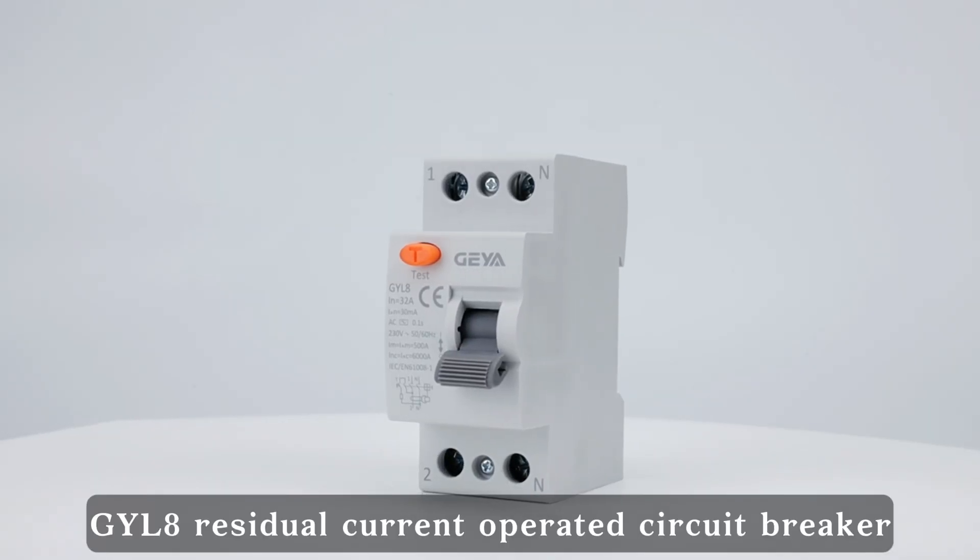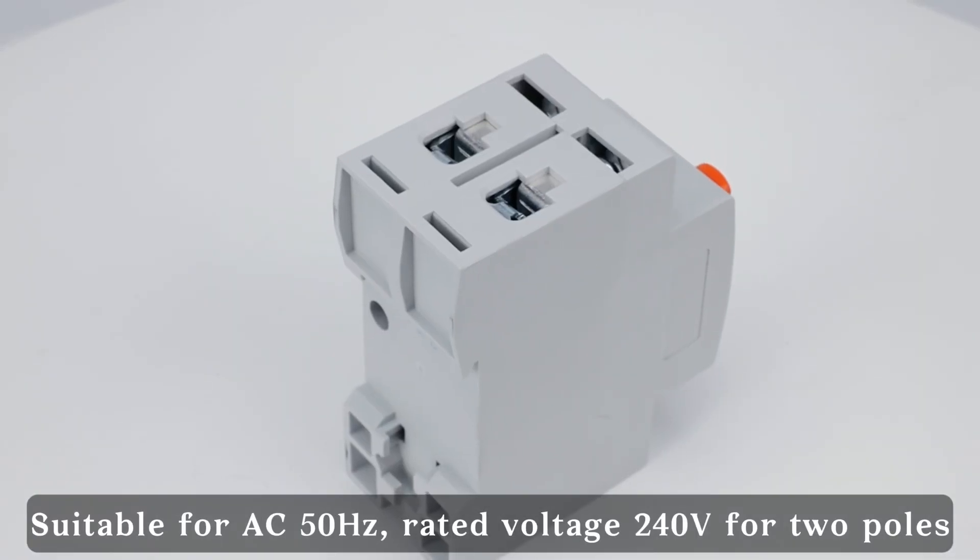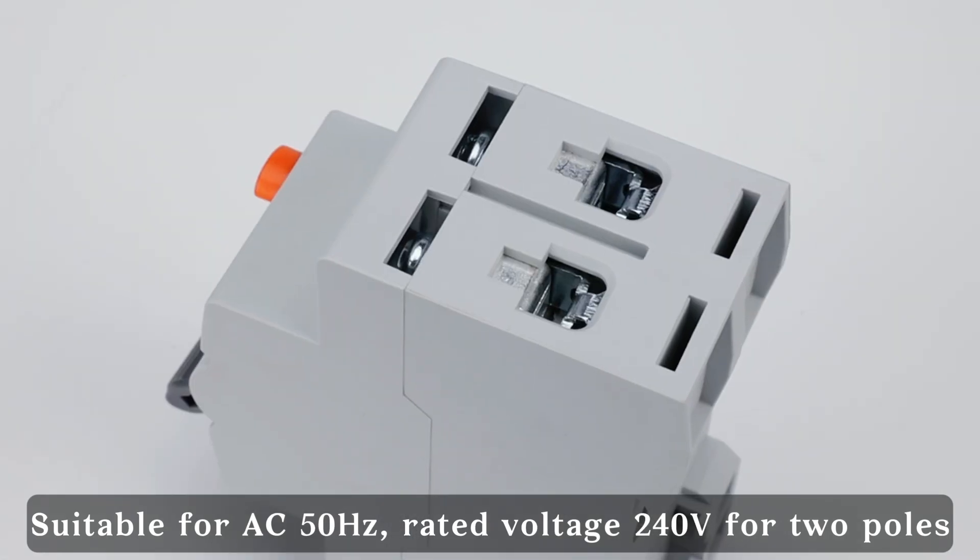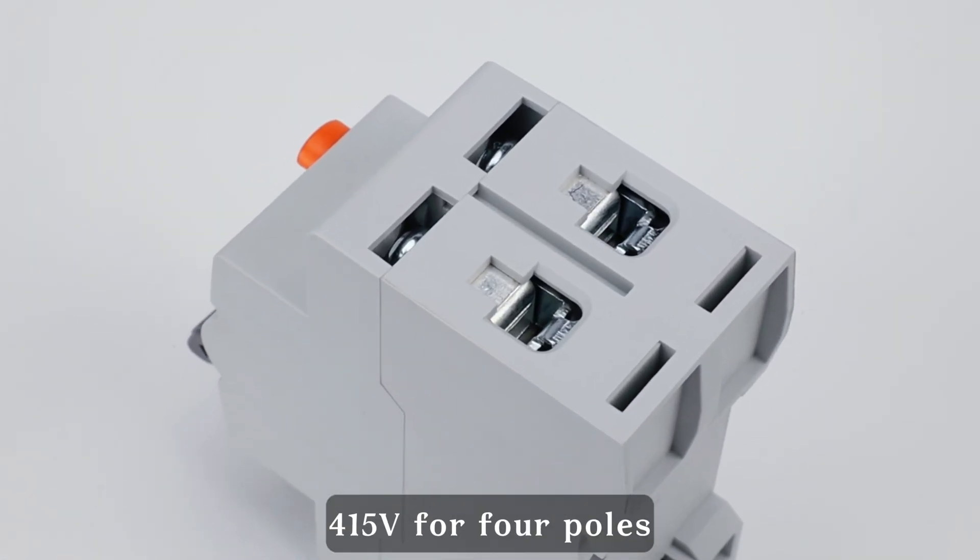The GYL-8 Residual Current Operated Circuit Breaker is suitable for AC 50Hz, with a rated voltage of 240V for 2 poles and 415V for 4 poles.